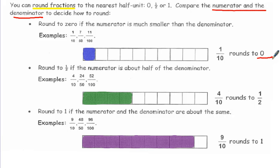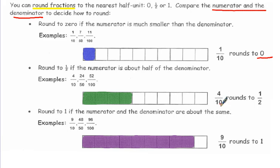Round to 1 half if the numerator is about half of the denominator — like 4 out of 10, 24 out of 50, or 52 out of 100. So in this example, 4 out of 10, or 4 tenths, would round to a half.